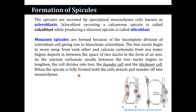How are spicules formed? Spicules are secreted by specialized cells known as scleroblasts. When a scleroblast secretes a calcareous spicule it is called a calcoblast, and when secreting a siliceous spicule it is called a silicoblast. Monaxon spicules are formed by incomplete division of scleroblast cells, giving rise to binucleate scleroblasts. As the nuclei move apart, calcium carbonate from sea water is deposited in the space between them in the form of an axis, and as the needle lengthens the cell divides into two.